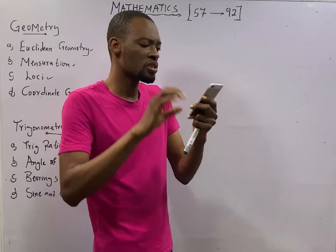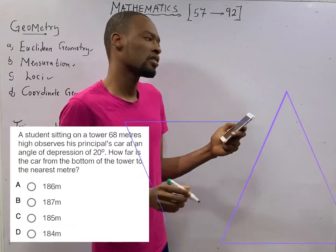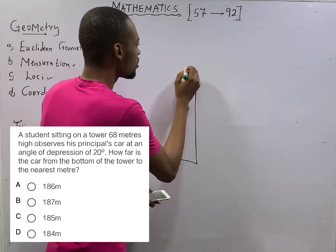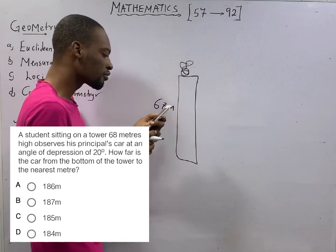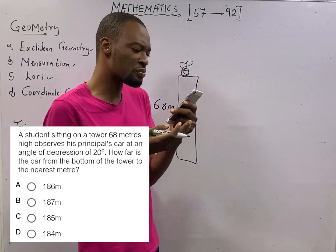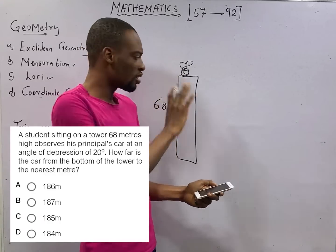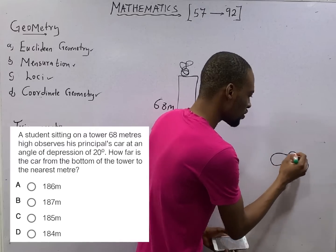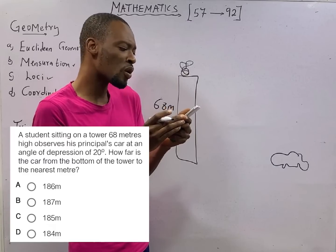A student sitting on a tower, 68 meters high. Whether you know a tower or whatever, we know that a student is sitting on something. This is the student. A student sitting on a tower, 68 meters high. Observes his principal's car. Wow. If he is on top of a tower, the principal's car will definitely be small like this.